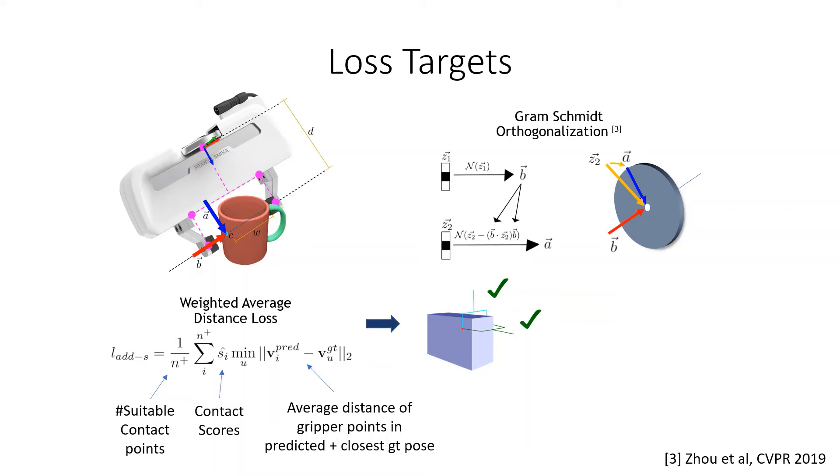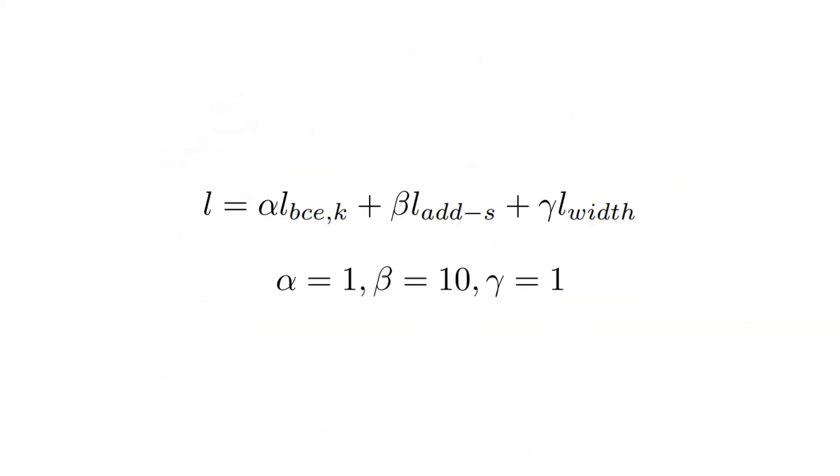The grasp width W is highly imbalanced and therefore binned before applying a weighted cross-entropy loss. Finally, all predicted contact scores are supervised by a binary cross-entropy loss. In practice, only the top K errors are backpropagated to again counteract data imbalance. Finally, we simply add up our weighted contact classification, grasp pose, and grasp width losses.